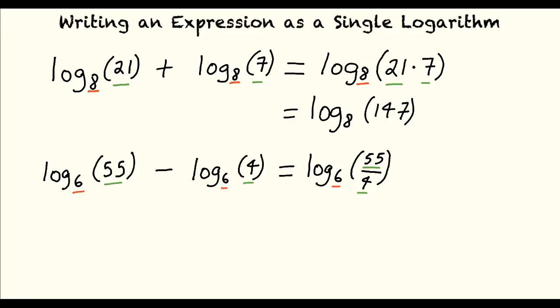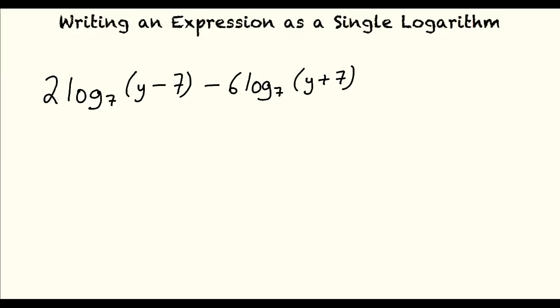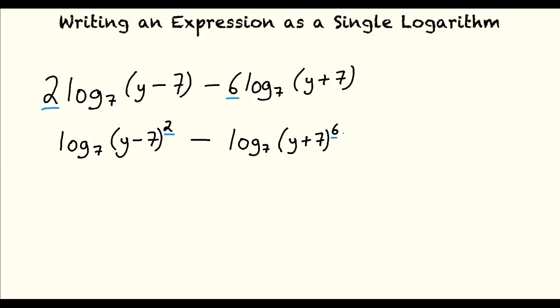I think I understand those two properties now, but what about the third property? Let's do an example of how to use the logarithm of a power property: 2 times log base 7 of (y minus 7), minus 6 times log base 7 of (y plus 7). For the first logarithmic expression, rewrite the non-logarithmic term as the power of the argument. Repeat this process for the second logarithmic expression. Thus, the expression now reads log base 7 of (y minus 7) squared, minus log base 7 of (y plus 7) to the sixth power.